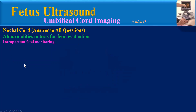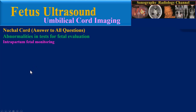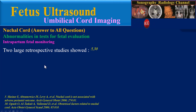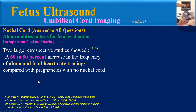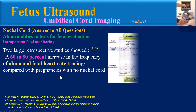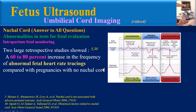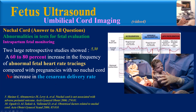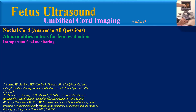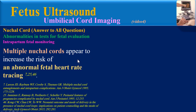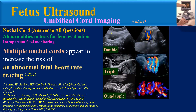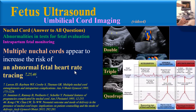Intrapartum fetal monitoring: Two large retrospective studies showed a 60 to 80 percent increase in the frequency of abnormal fetal heart rate tracings compared with pregnancies with no nuchal cord, with no increase in caesarean delivery rate but a higher rate of labor induction. Multiple nuchal cords appear to increase the risk of an abnormal fetal heart rate tracing.